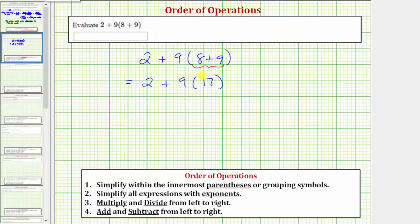So looking at our expression, our next step is to find nine times 17. Well, nine times 17 is equal to 153. So this expression simplifies to two plus 153.